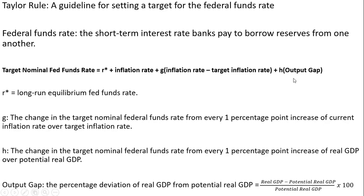And finally, the output gap is just the percentage deviation of real GDP from potential real GDP, or trendline real GDP. We calculate it as: real GDP minus potential real GDP, divided by potential real GDP, all multiplied by 100 — a standard percentage change formula.